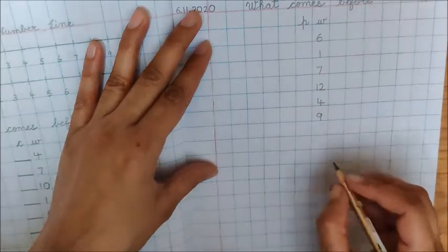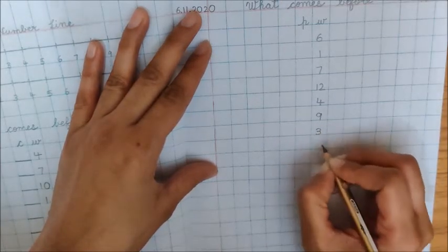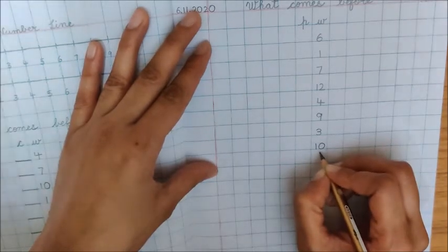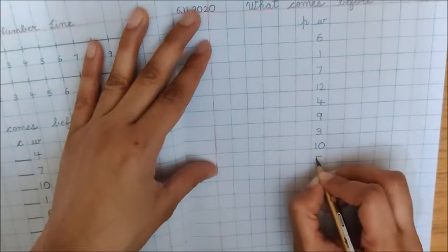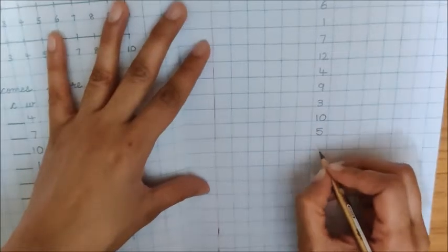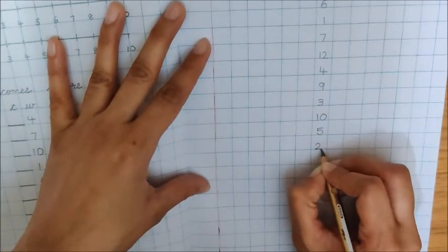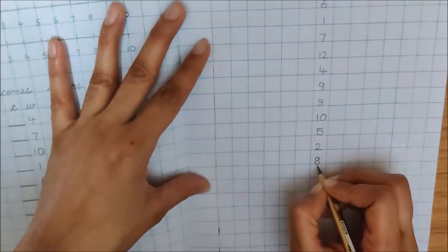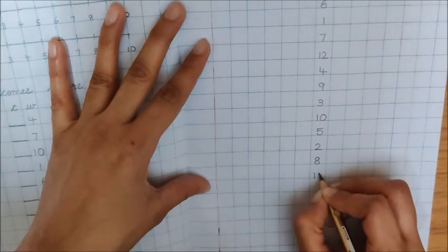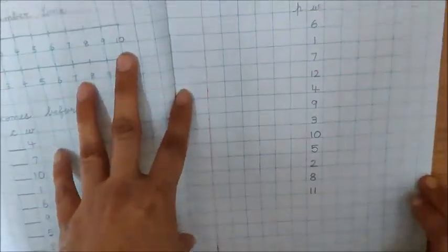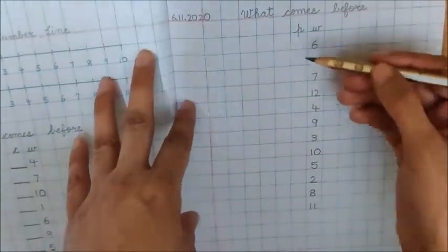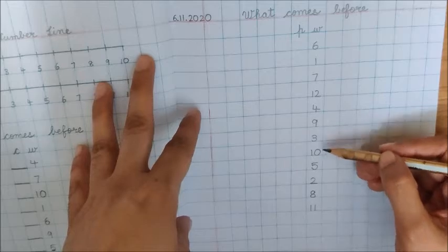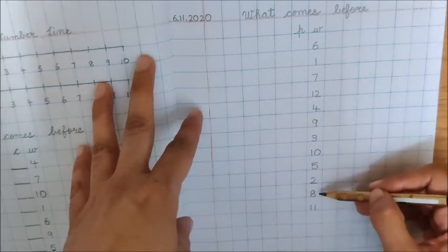Below 9, write down 3. Below 3, write down 10. Below 10, write down 5. Below 5, write down 2. Next, write down 8. And then write down 11. I am repeating the numbers one more time. 6, 1, 7, 12, 4, 9, 3, 10, 5, 2, 8, 11.